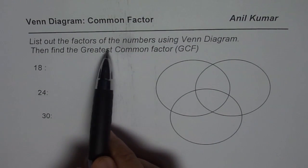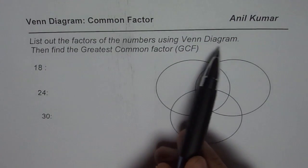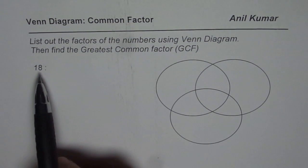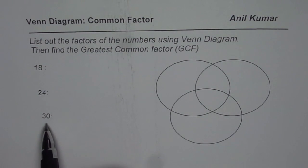The question is: list out the factors of numbers using Venn diagram, then find the greatest common factor (GCF). The numbers are 18, 24, and 30.